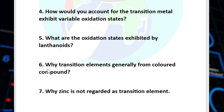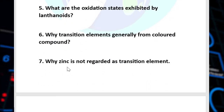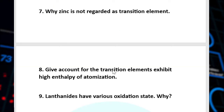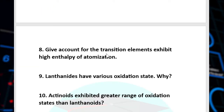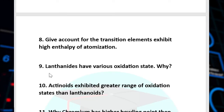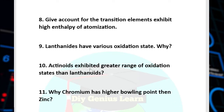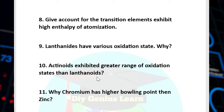Question number 6: Why do transition elements generally form coloured compounds? Question number 7: Why is zinc not regarded as a transition element? Question number 8: Account for the fact that transition elements exhibit high enthalpy of atomization. Question number 9: Lanthanoids have various oxidation states — why? Question number 10: Actinoids exhibit a greater range of oxidation states than lanthanoids — why?